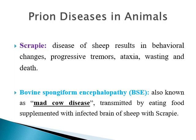Prion diseases can also develop in animals, and there are two forms. The first is called Scrapie, which is a disease of sheep, resulting in behavioral changes, progressive tremors, ataxia, wasting, and death. The second form is called bovine spongiform encephalopathy, BSE, also known as mad cow disease, which is transmitted to cows by eating food supplemented with infected brain tissue from sheep with Scrapie.